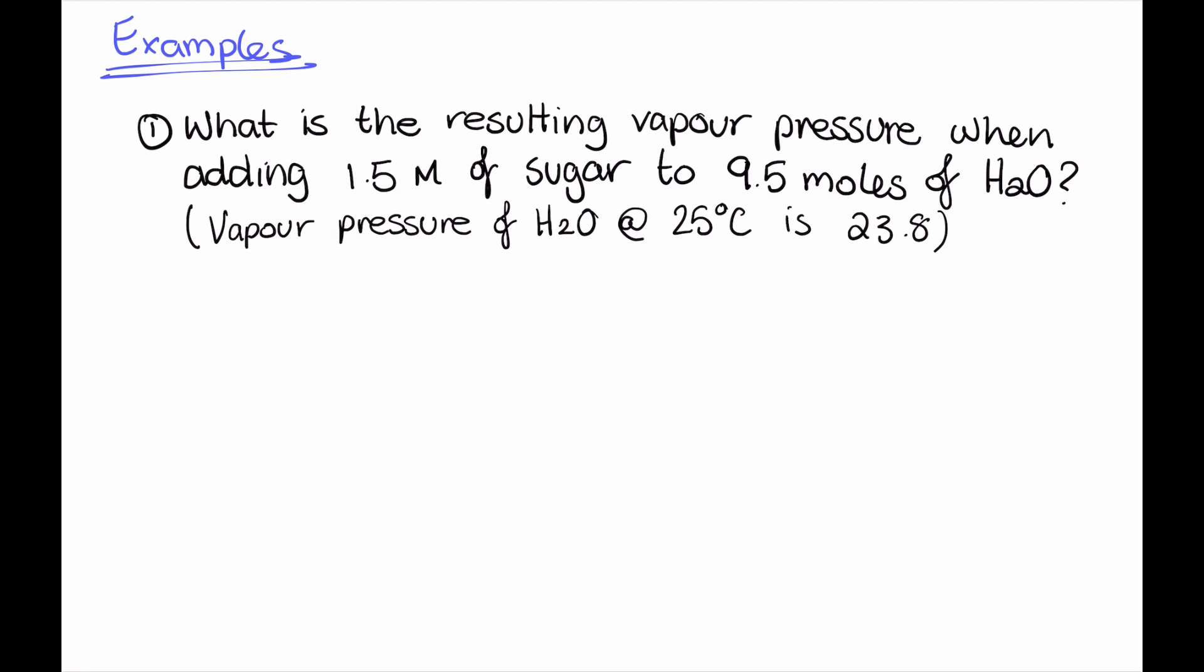So in order to do this we just use Raoult's equation. The vapor pressure of that solution is equal to the mole fraction of the solvent multiplied by the vapor pressure of the pure solvent. We can just sub in what we already know. We're trying to find the resulting vapor pressure of the solution. We haven't calculated the mole fraction yet, but we do know the vapor pressure of the pure solvent and that is 23.8 torr.